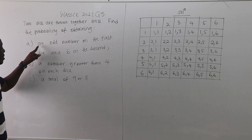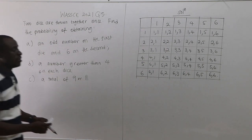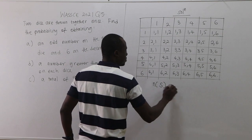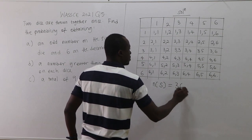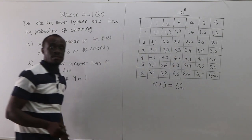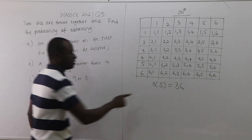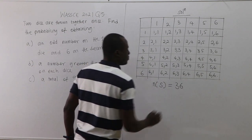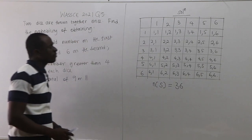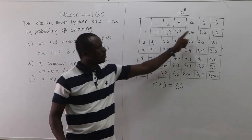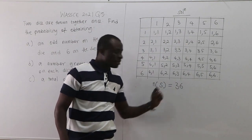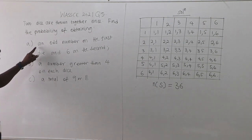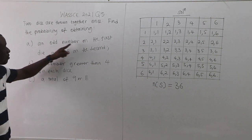We have been told the total number of sample space outcomes. Counting all of them gives us 36. So the number of elements in the sample space is 36.